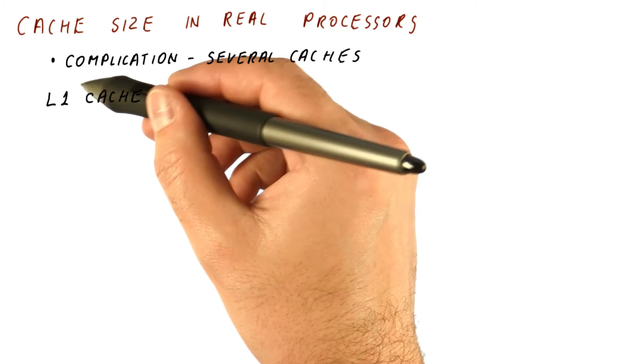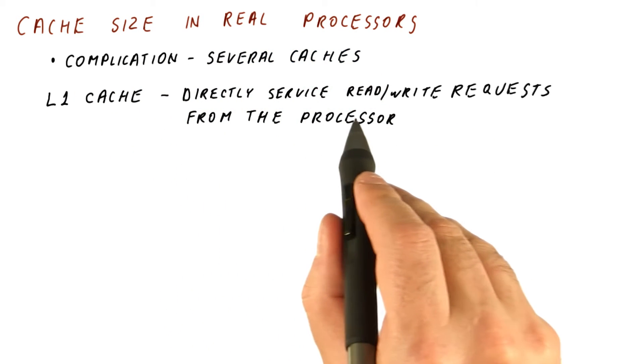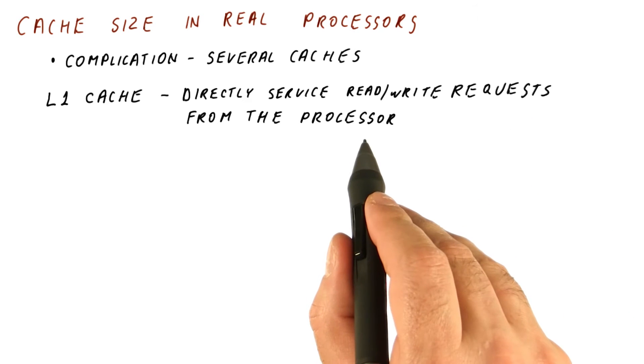Let's look at caches that we call L1 or level 1 caches, which are the caches that directly service the read and write requests from the processor. When the processor wants to read or write, it first goes to the L1 cache to check if it has a hit.